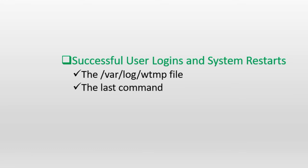The next item on our list is how to view the history of successful user logins and previous system reboots. The information relevant to these activities is stored in the WTMP file, which is located in the /var/log directory. The data collected in this file includes the user login name, the terminal identifier, the IP address or hostname of the remote system or whether the terminal session is running on the graphical desktop, the login and logout timestamps, the duration of the entire login session, and whether the user is still logged in. Most of this information is transferred from the UTMP file. The data in the WTMP file is stored in a non-text format, which can be read, understood, and displayed with the use of a command called last. Let's run this command.